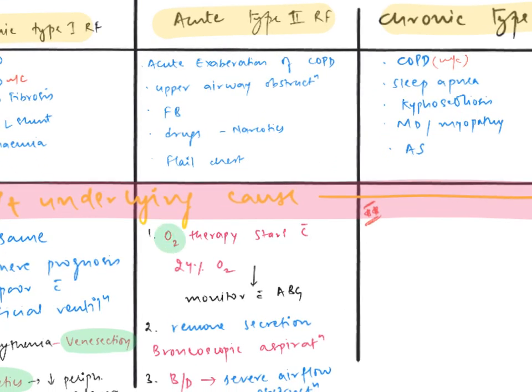For acute type 2 respiratory failure: start with 24 percent oxygen and monitor with ABG. Second, remove secretions by bronchoscopic aspiration. Third, use bronchodilators in case of severe airflow obstruction. Fourth, provide assisted ventilation — non-invasive or invasive depending on the patient's condition.